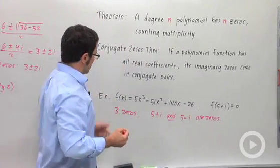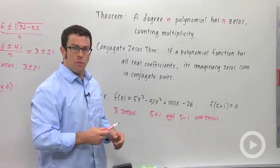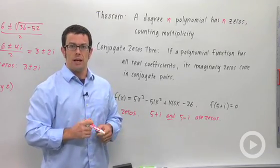So that's how I use these two theorems to analyze the zeros of a polynomial. And I'll do a little bit more with that in a future example.